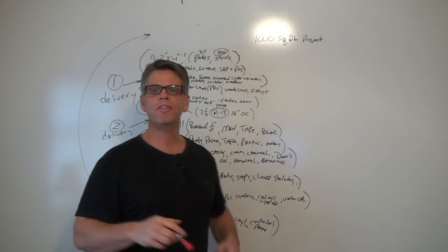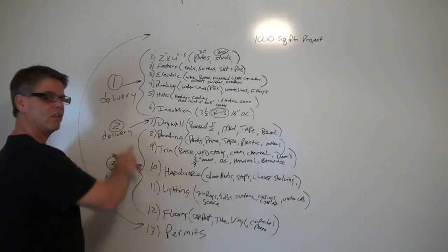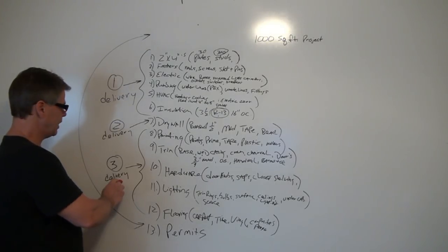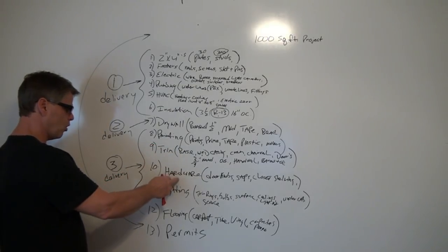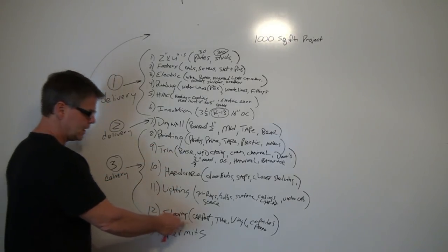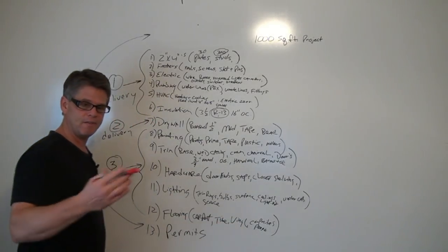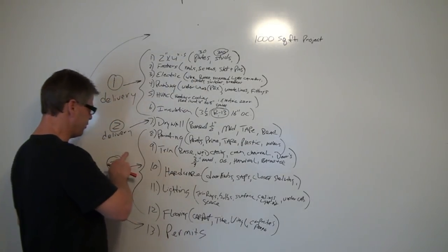Before we get started here, there's one thing that I didn't show you yesterday. We were talking about deliveries. I only got to the second delivery. There's a third delivery. And what's on that third delivery for me is going to be the painting, the trim, the hardware, the lighting, and the flooring. Now I'm not doing carpet and padding, but the tile, vinyl, and composite flooring, if that's in my client's job, I'm getting it on the truck in my third order.